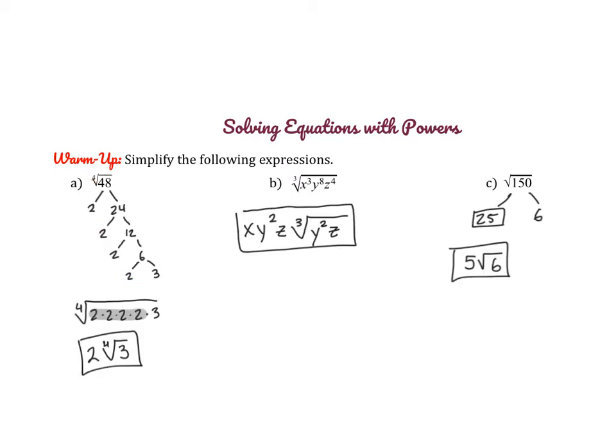Alright, so go ahead and check your answers here. So for part A, I found the prime factors, and since it's a fourth root, I was looking for groups of four. So you get two times the fourth root of three.